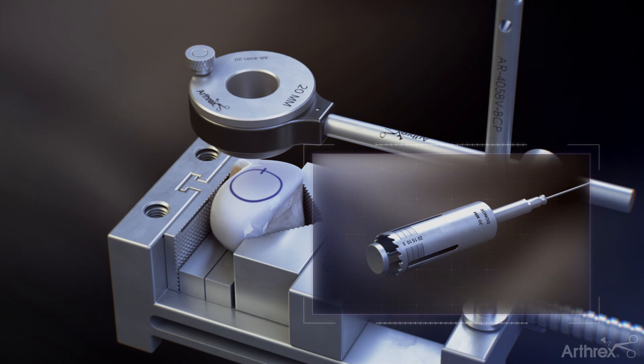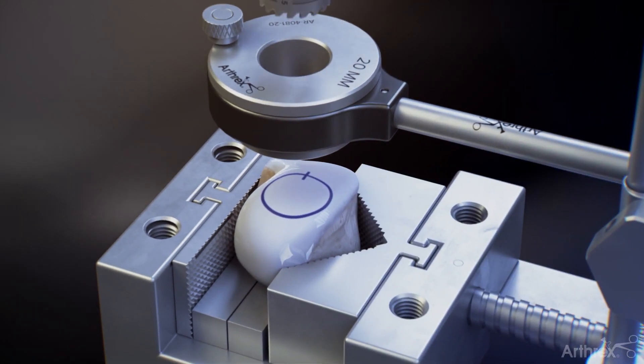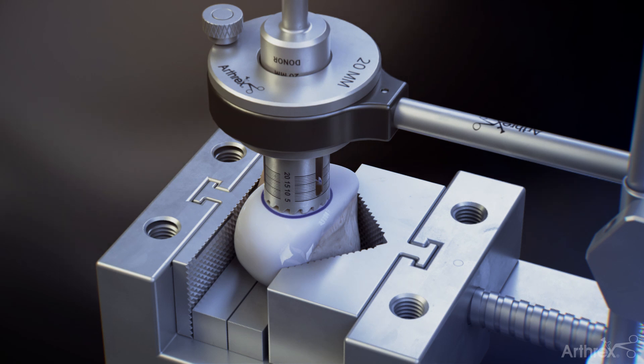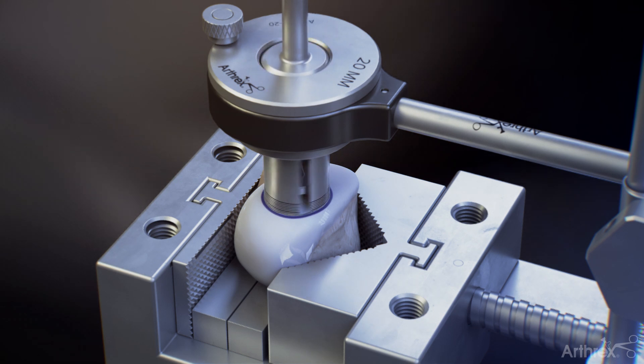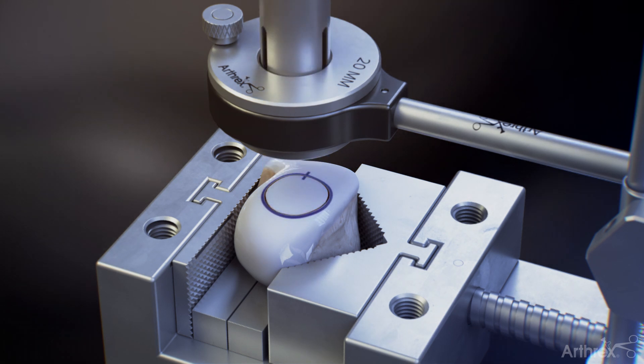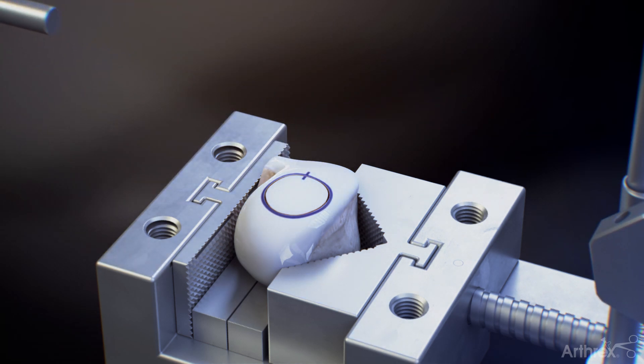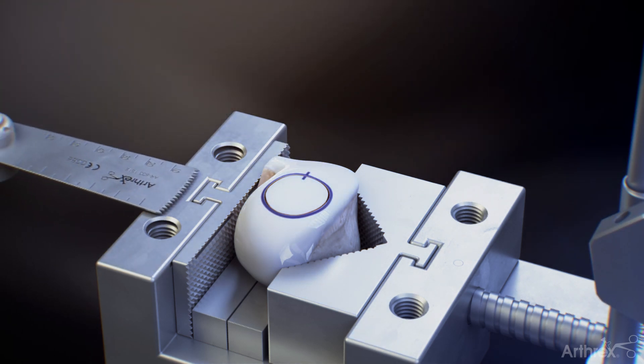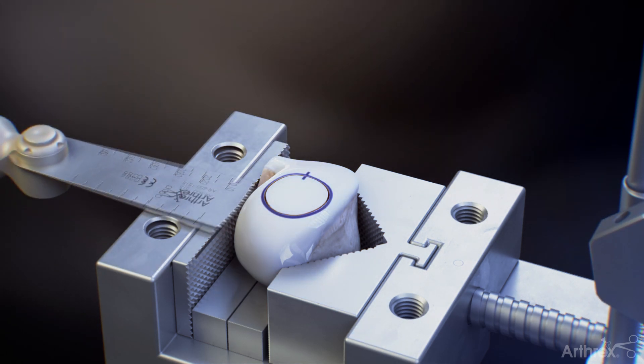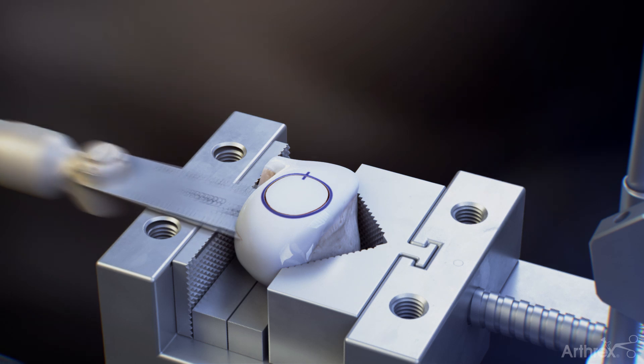Connect the allograft OATS donor harvester with a collared guide pin to a drill and pass it into the proximal graft housing to rest on the graft's surface. Drill the harvester to a depth of 15 mm to 20 mm and then remove it. Advance a sagittal saw perpendicularly through the condyle at the approximate depth of the reaming and continue until the core releases.